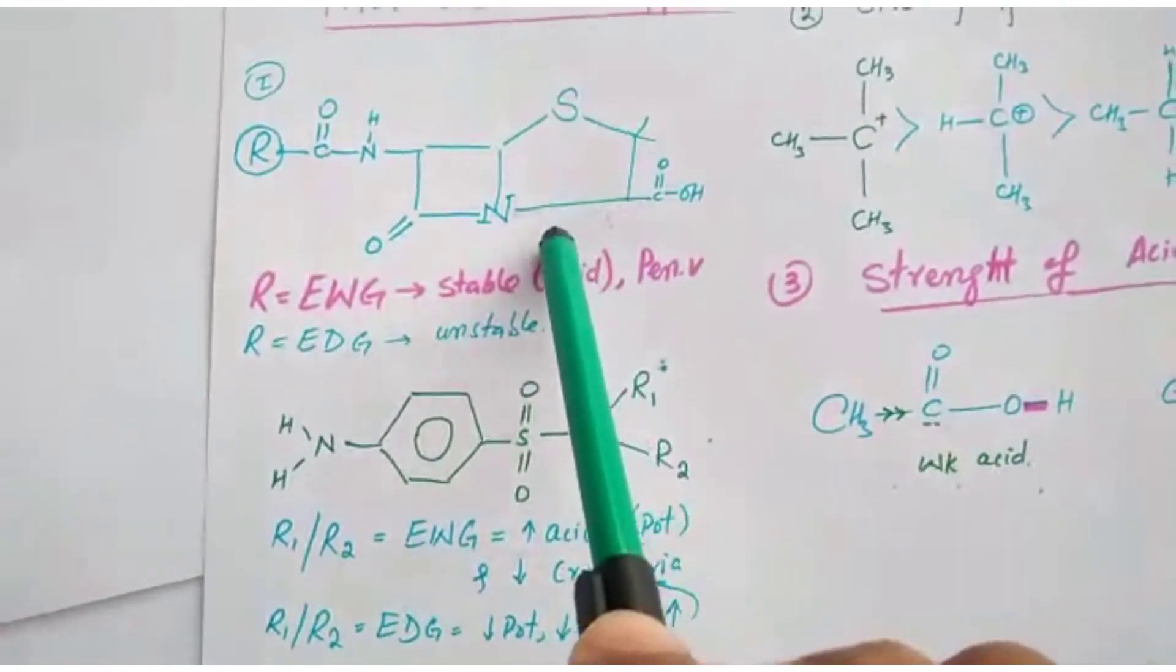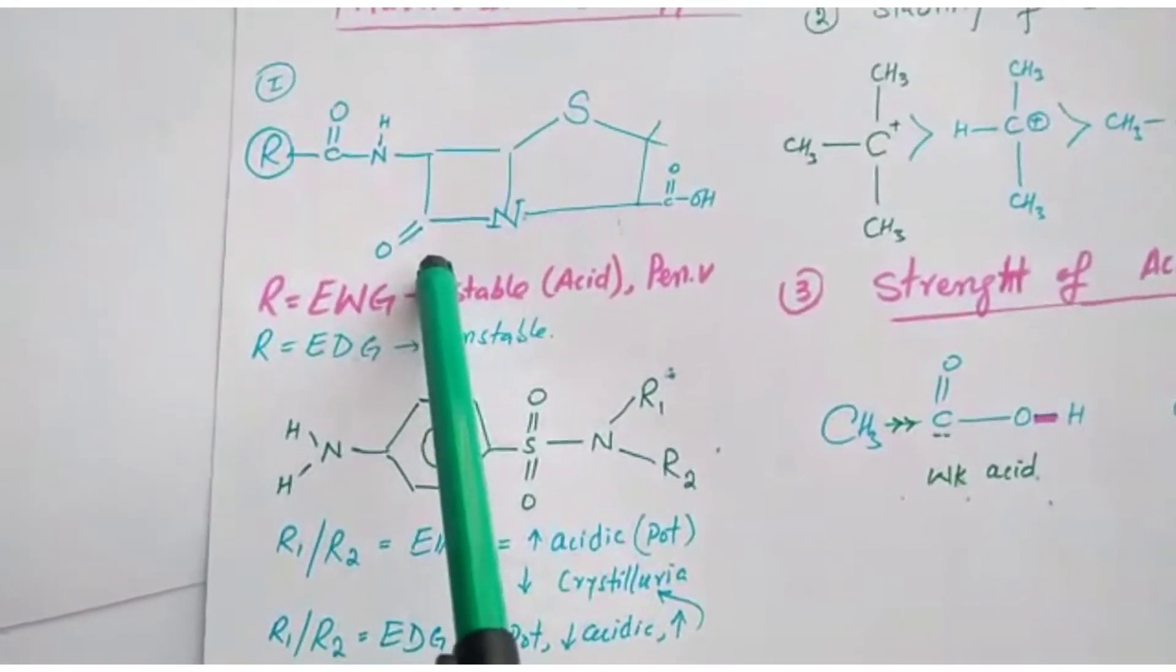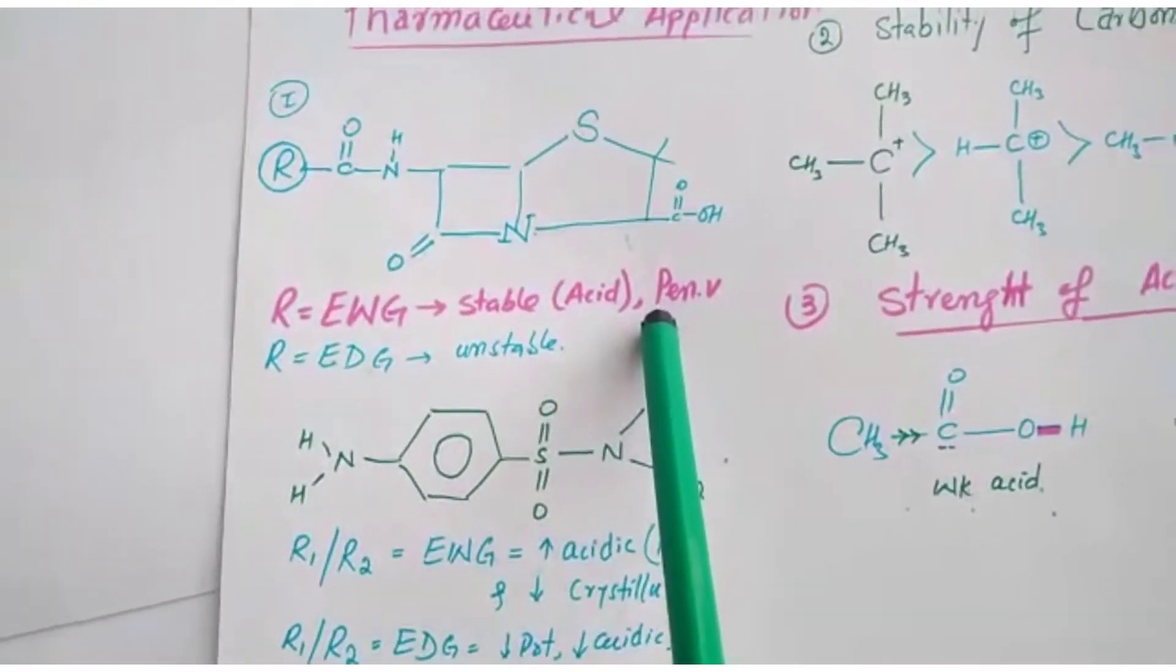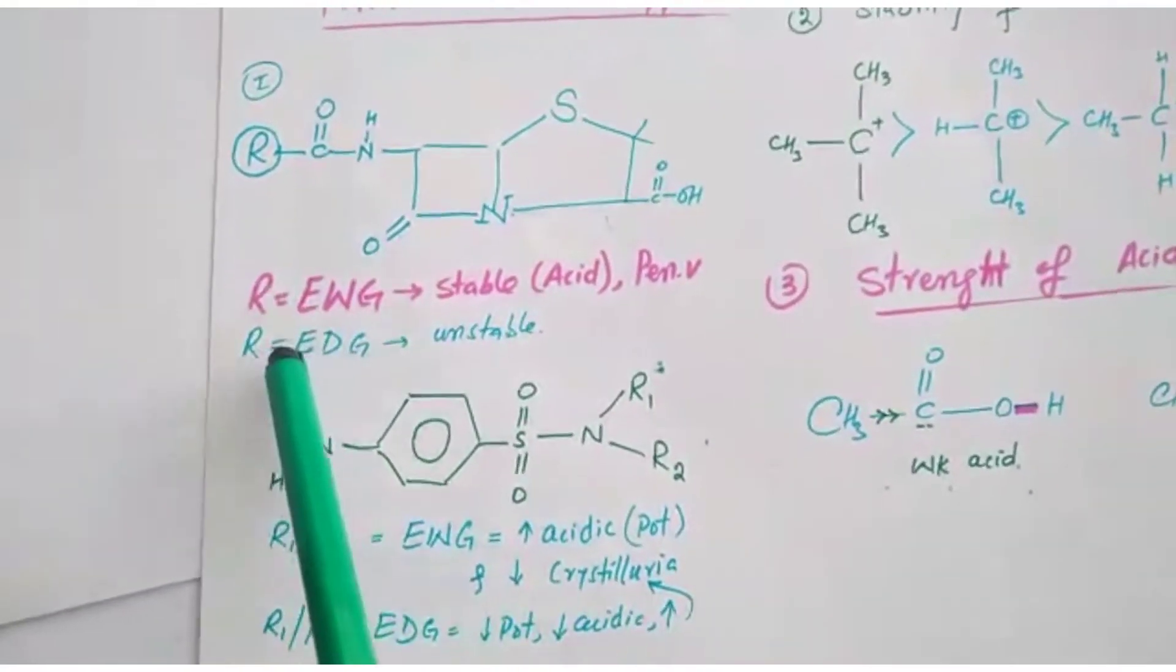Especially this penicillin will be acid stable, like in case of penicillin V, phenoxymethylpenicillin. But if this R group is electron donating group, the penicillin will be unstable.